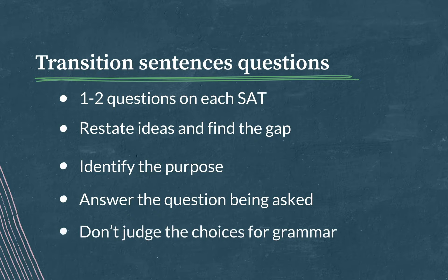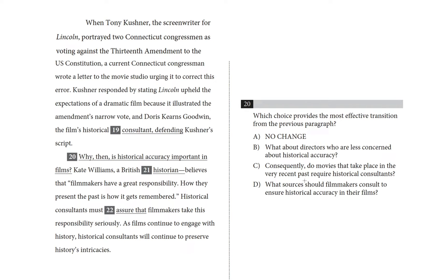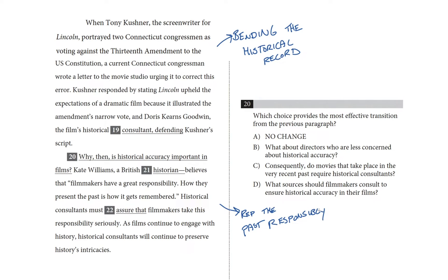Let's head back to the passage. Let's restate the ideas from these two paragraphs. Paragraph one is about how Tony Kushner bent the historical record for drama's sake in his film Lincoln, and how his historical consultant, Doris Kearns Goodwin, defended that decision. Paragraph two quotes a different historian who says filmmakers must represent the past responsibly, and the author says it is a consultant's job to enforce that responsibility. It seems like that second historian, Kate Williams, would disagree with Doris Kearns Goodwin about what a historical consultant's job is — is it to make changes to history for entertainment, or to represent the past accurately? So we have a conflict between these two points of view. The purpose of the information we're transitioning to is a challenge to Goodwin and Kushner's position. We're looking for something that introduces an opposing point of view — basically, what does the other side say?